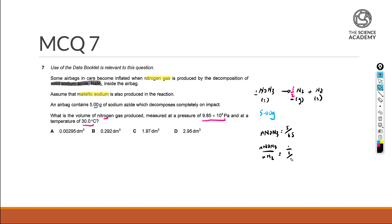1 over 3 over 2. That means that the number of moles of nitrogen will be equal to the number of moles of NaN3 multiplied by 3 over 2. Working it out, it will be 5 over 65 times 3 over 2, and this will give us a 4sf value of 0.1154.